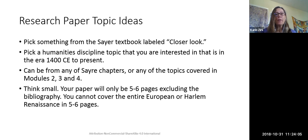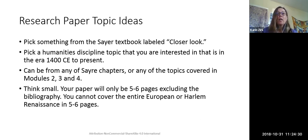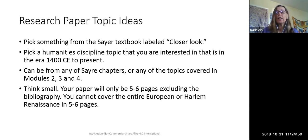The first part is to come up with a topic idea, and I know that's really hard for some people. You can pick something from the Sayer textbook labeled 'Closer Look' — those sections look at a painting, a building, the architecture, or a style. You could also just pick a humanities discipline topic that you are interested in, in the era covered in this course, which is 1400 to present globally. It could be film, art, architecture, philosophy, poetry, literature, or theater.